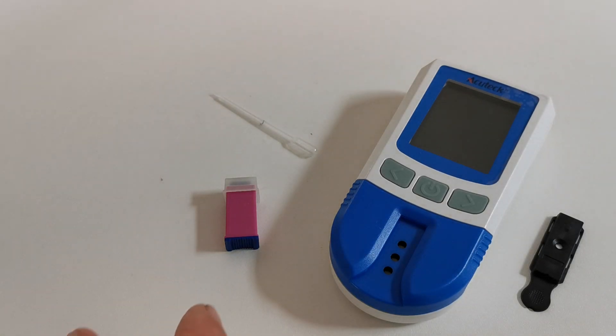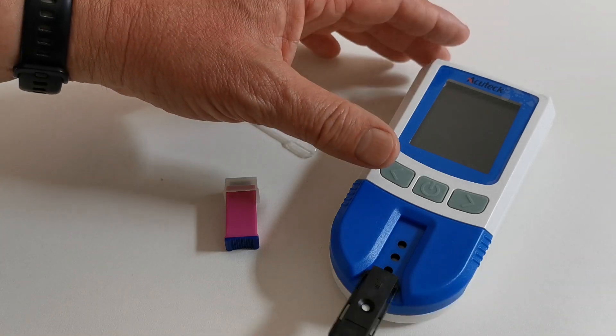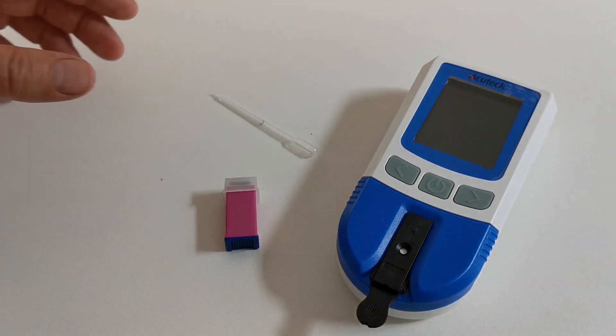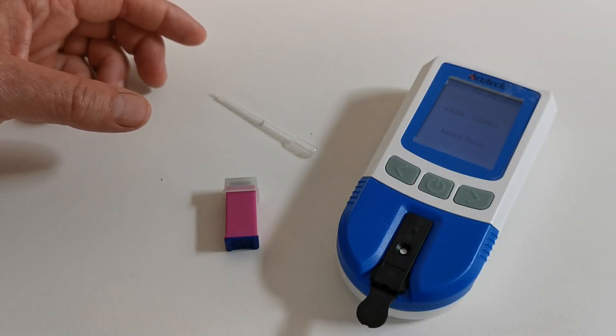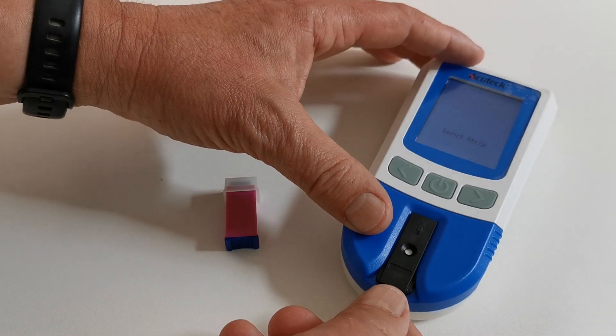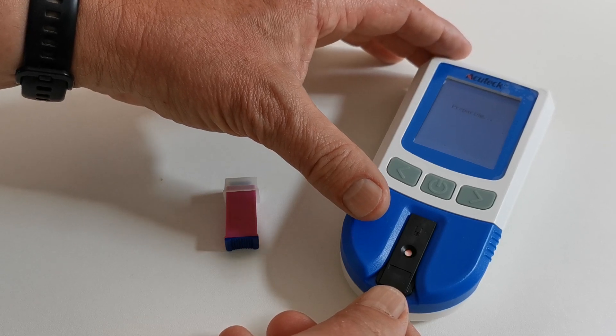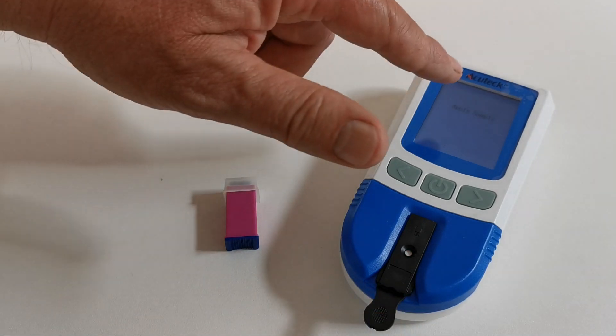When you've completed steps one and two, place the test device into your meter. It should automatically recognize the meter strip, and if the code chip is in place, it should prepare itself and ask you to apply the sample.